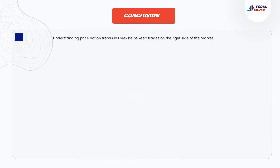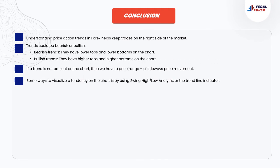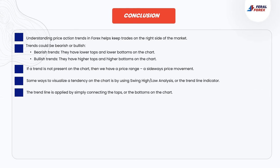Conclusion. Understanding price action trends in Forex helps keep trades on the right side of the market. Trends could be bearish or bullish. Bearish trends have lower tops and lower bottoms on the chart. Bullish trends have higher tops and higher bottoms on the chart. If a trend is not present on the chart, then we have a price range — a sideways price movement. Some ways to visualize a tendency on the chart is by using swing high or low analysis, or the trend line indicator. The trend line is applied by simply connecting the tops or the bottoms on the chart.